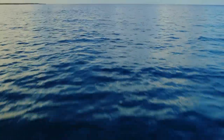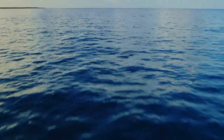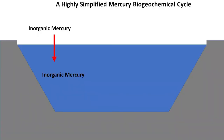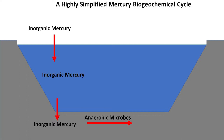Once mercury is in the atmosphere, it is carried to aquatic ecosystems such as lakes, rivers, seas, and oceans, where it enters the water column, finding its way to sediments. Sediments tend to be anoxic, and in this environment, anaerobic bacteria and archaea with a specific set of genes convert inorganic mercury to an organic form called methylmercury.